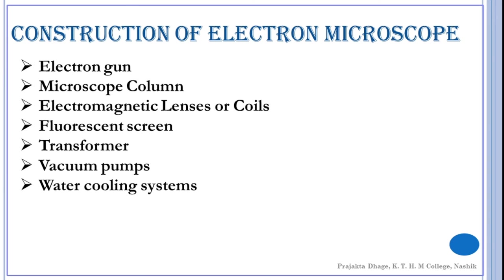Let's move on to the construction of electron microscope, which we will be studying under following heads. The first one is electron gun. Second one is microscope column. Third is electromagnetic lenses or coils. Fourth is fluorescent screen. Fifth is transformer. Sixth is vacuum pumps. And the last one is water cooling systems. Electron gun is located at the top of the microscope body. It consists of hot tungsten filament. It is the source of electrons forming the beam. The tungsten filament is a source of negatively biased shield with an aperture through which an electron beam is drawn off to a grounded and a positive anode.